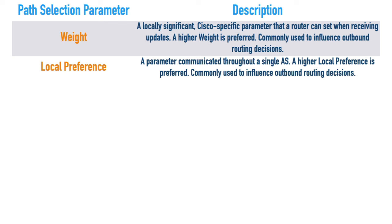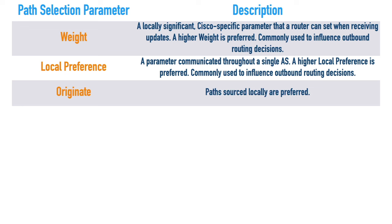One confusing thing about the acrostic is there are two uses of the word 'oranges' - two path attributes that begin with O. The first one is 'originate.' There's a lot of confusion about this, so let me simplify: basically, a router is going to prefer a route if we injected it into BGP - if it was sourced locally from us. That's really all we need to worry about with originate. How do you know it was sourced from us? In the output of show IP BGP, we'll see the next hop is all zeros - 0.0.0.0 - meaning it was originated locally.